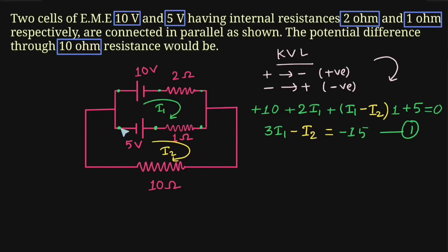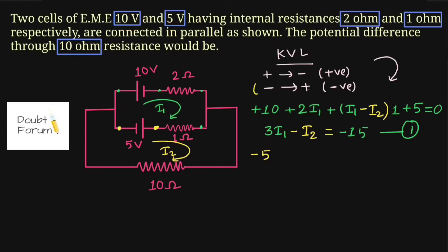Now applying KVL in the second loop, starting from this point and moving in the clockwise direction. As we move from this point to the next, we first find the negative plate of the battery then the positive one — moving from lower potential towards higher potential — so this 5 volt is taken as negative. Moving further, i2 is moving in the forward direction and i1 is moving in the backward direction.